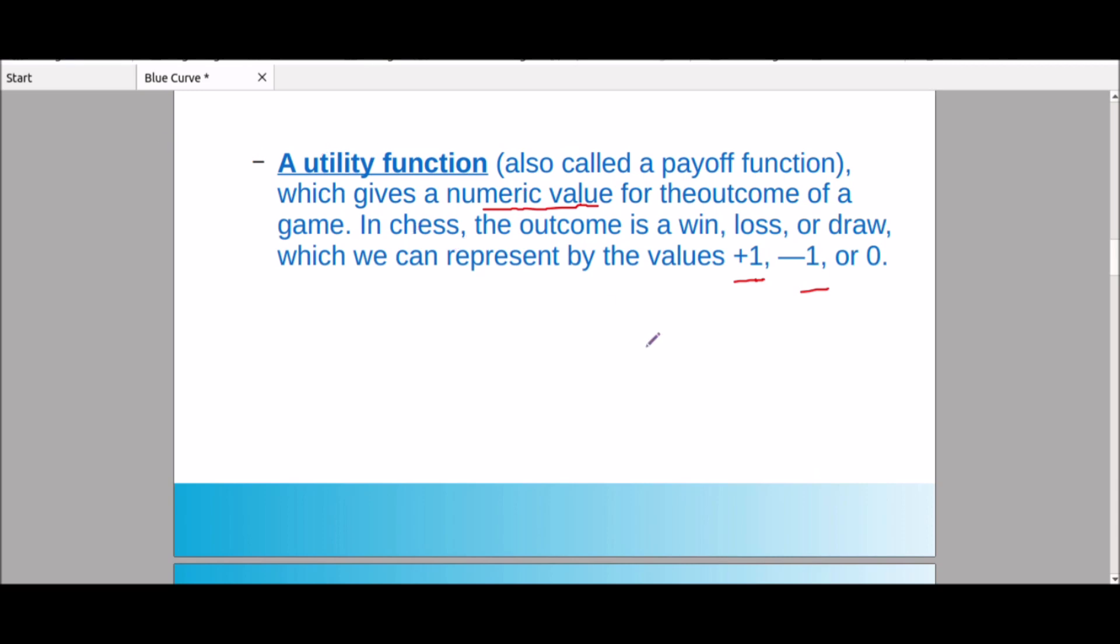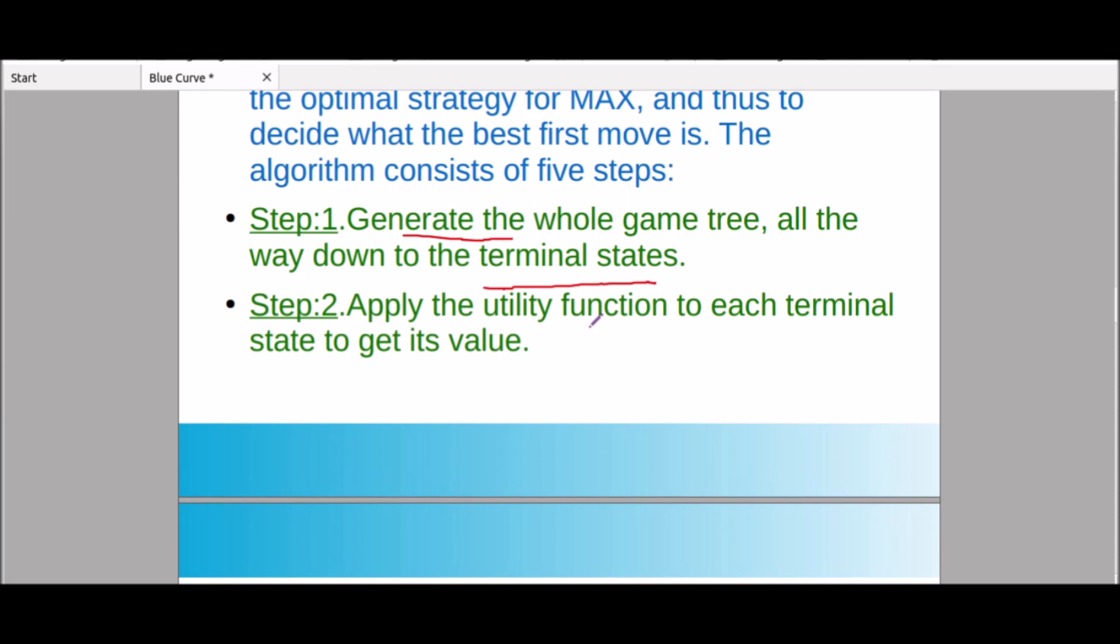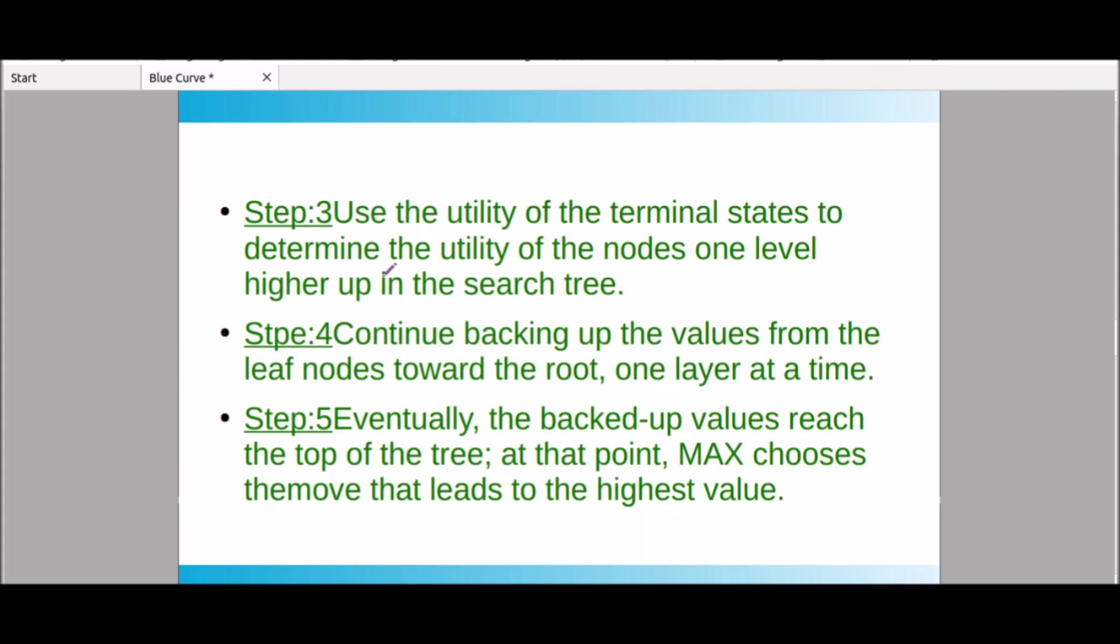We have five steps. First step, generate the whole game tree all the way down to terminal states. First we can choose the tree, what are the chances for first player, that is the branching factor. Next, each branching factor is a tree, so we can choose the game tree. Next, apply the utility function to each terminal state to get its value. We can choose the values level wise.